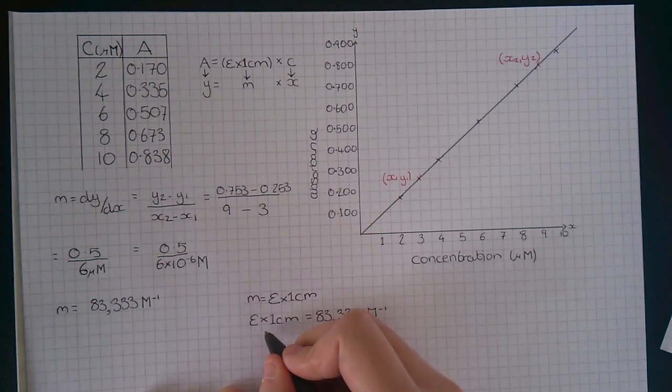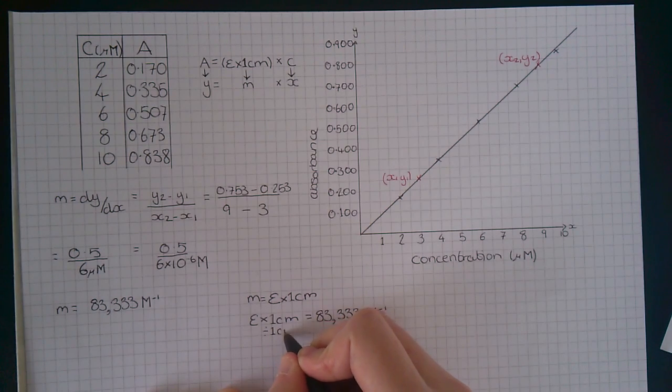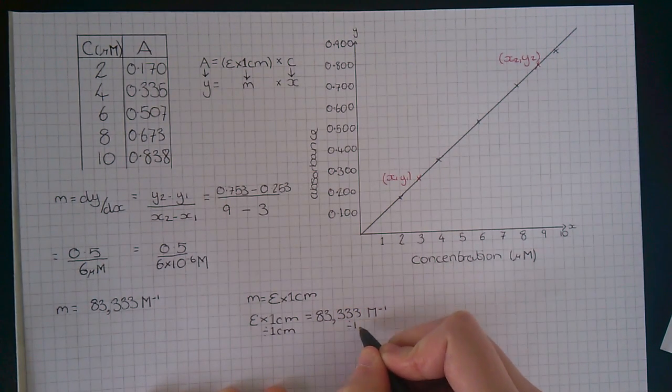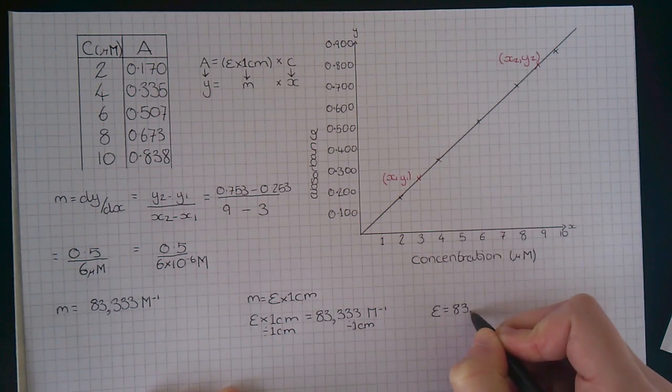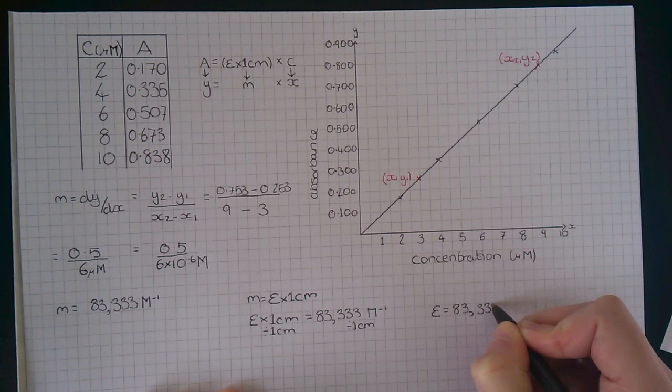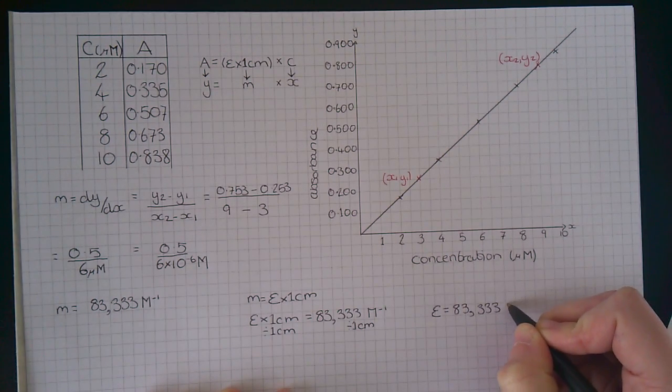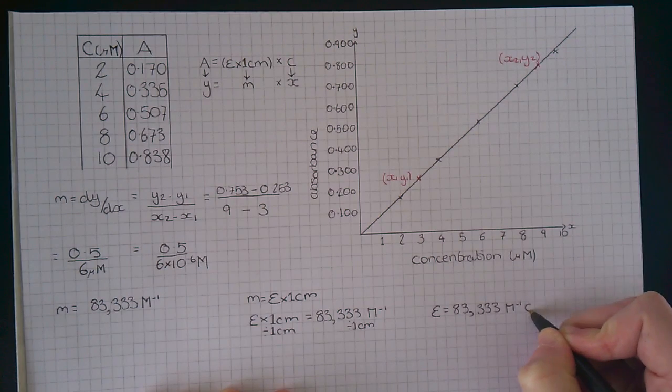To get epsilon on its own, we just have to divide both sides by 1 centimeter, which gives us epsilon equals 83,333, with units of per molar per centimeter.